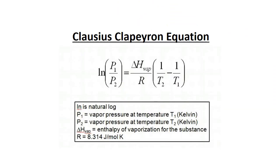First, let's check out what the Clausius-Clapeyron equation is and see how it looks. You can see that it is the natural log of P1 by P2, where P1 is vapor pressure at temperature T1 and P2 is the vapor pressure at temperature T2.